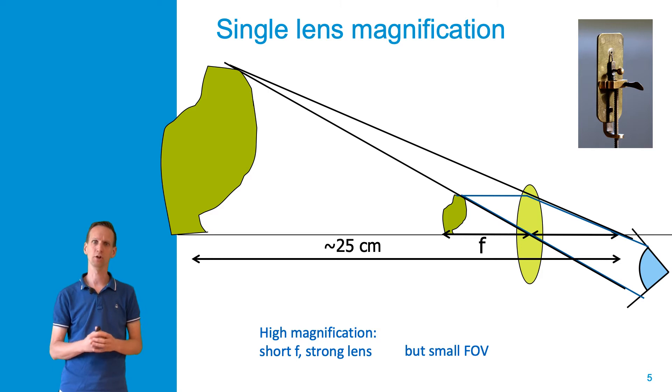In general for a single lens system we see that in order to reach a high magnification we need a short focal distance, meaning a strong lens and high angular deflections of the light rays passing through the lens.